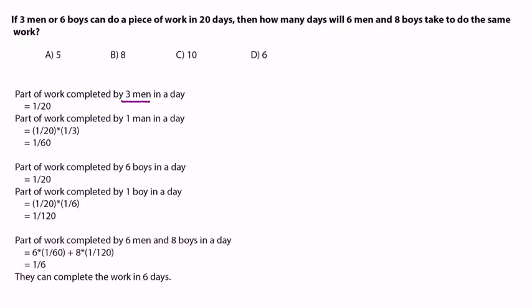3 men complete the work in 20 days, so the part of work completed by 3 men in a day is 1/20. The part completed by 1 man in a day is (1/20)÷3 = 1/60.